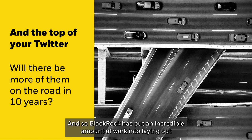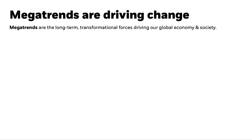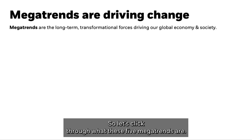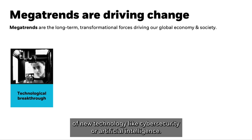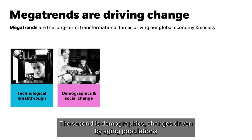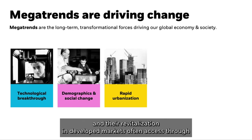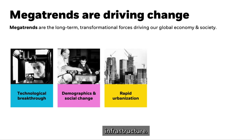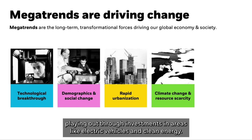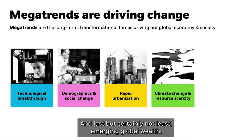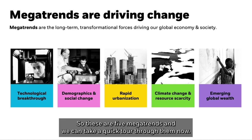BlackRock has put an incredible amount of work into laying out five megatrends — our superhighways to the future — representing the best thinking across the firm. The first is technological breakthroughs: long-term adoption of new technology like cybersecurity or artificial intelligence. Second is demographics: changes driven by aging populations impacting breakthroughs in genomics and immunology. Third, rapid urbanization: the rise of cities in emerging markets and their revitalization in developed markets, often accessed through infrastructure. Fourth, climate change: shifts by consumers, corporations, and governments toward a cleaner, greener tomorrow via electric vehicles and clean energy. Fifth, emerging global wealth: the rise of the middle-class consumer in emerging markets.